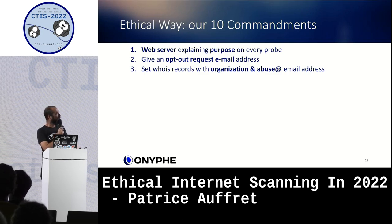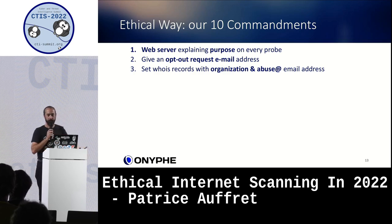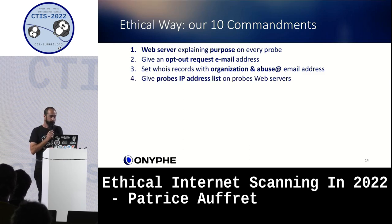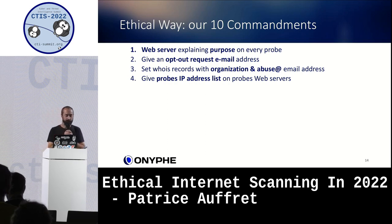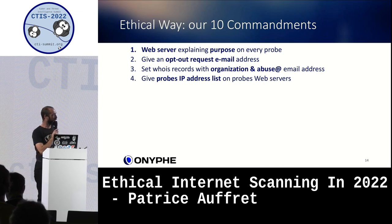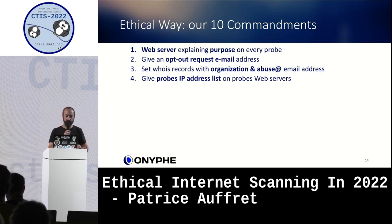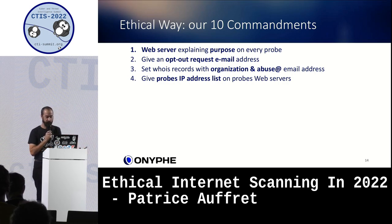You have to set your Whois records with the name of your organization and the abuse email address, since IT admins may use Whois to reach out. On your web servers, publish the complete list of your probe IP addresses. Why? Because maybe the IT admin doesn't want to contact you at all — if you give them the list, they'll simply add it to their firewall rules and never hear about you again. That's the ethical way.